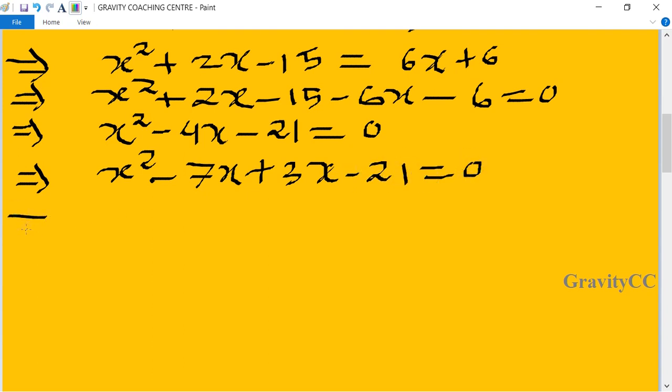Now we take x as a common from first two parts and 3 as a common from last two parts. x minus 7, equal to 0.